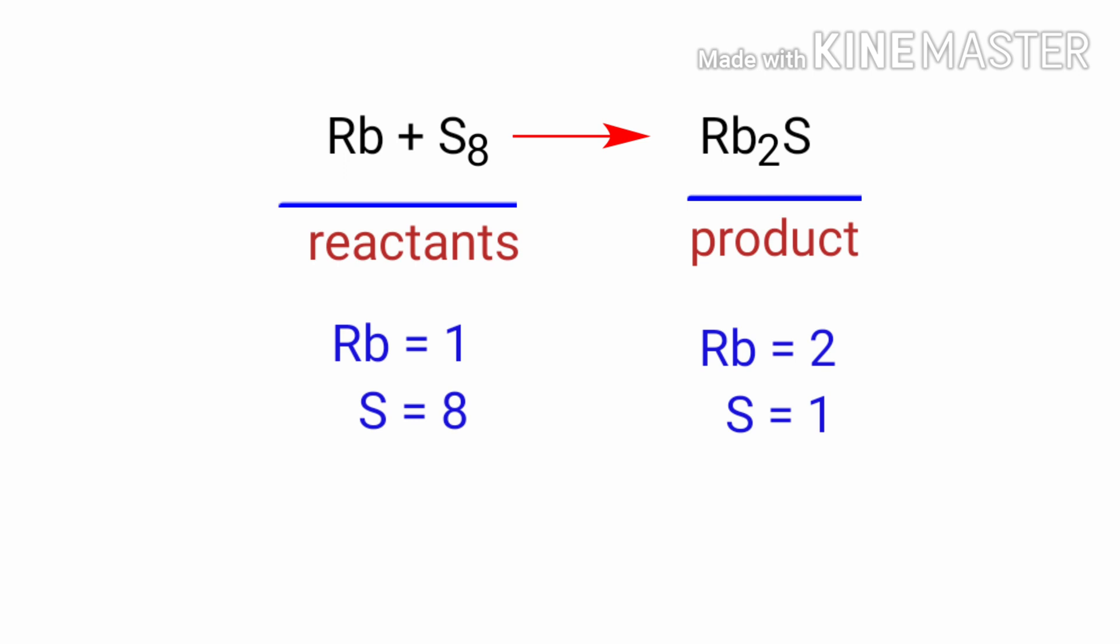To balance the chemical equation we need to make use of coefficients. A coefficient is a number that we place in front of a chemical formula.